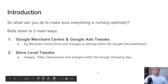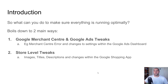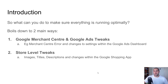So what can you do to make sure everything's running optimally? It really boils down to two things. You can make changes within Google Merchant Center and Google Ads — those two platforms within Google. That includes things like fixing your Merchant Center errors and making changes within your campaigns. The next level of tweaks you can make are at the store level. This includes things like images, titles, descriptions, and changes within the Google Shopping app.